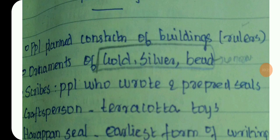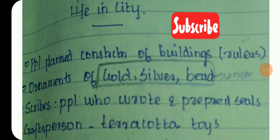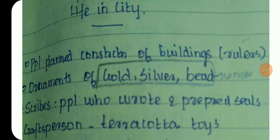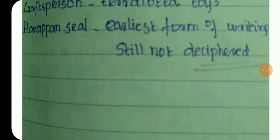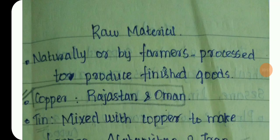Occupations included polishing beads, carving seals, inlay setting, building construction, making gold and silver ornaments, scribes, and making terracotta toys. The script found is among the earliest forms of writing but remains undeciphered.